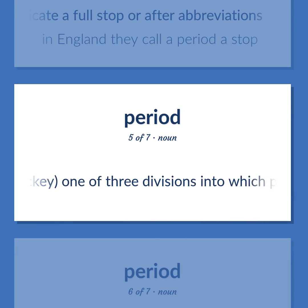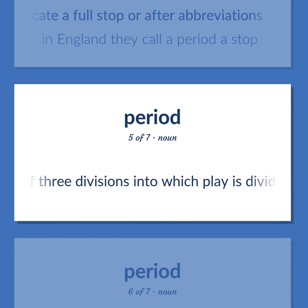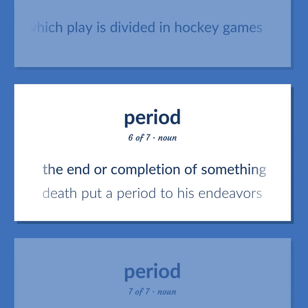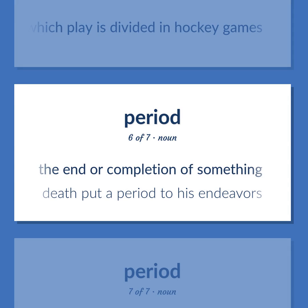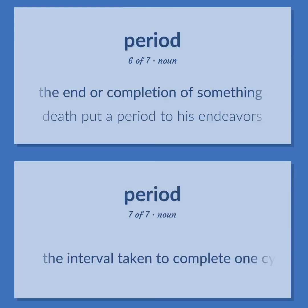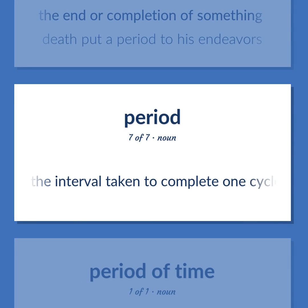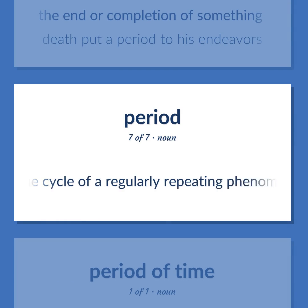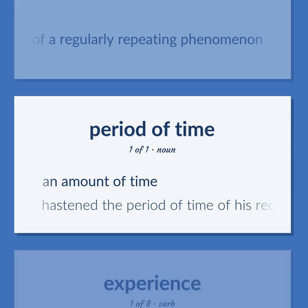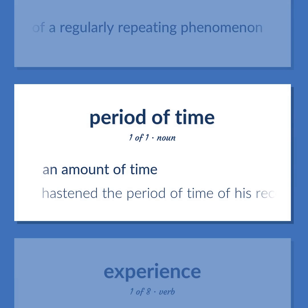PERIOD: Ice hockey: one of three divisions into which play is divided in hockey games. The end or completion of something — death put a period to his endeavors. The interval taken to complete one cycle of a regularly repeating phenomenon. An amount of time — hastened the period of time of his recovery.